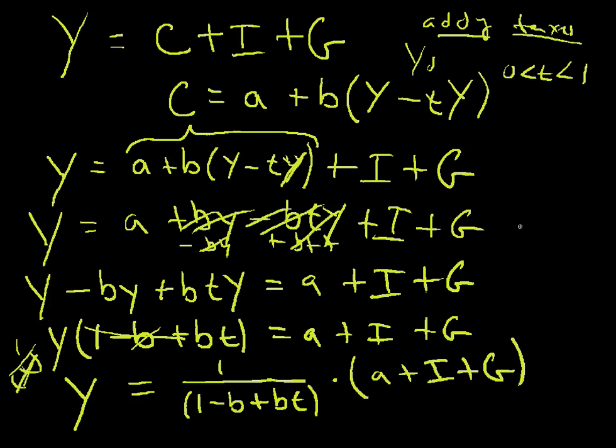So now when you change government spending, you have to use a new multiplier. And that's what this thing is here. 1 over 1 minus b plus bt becomes the new tax multiplier.